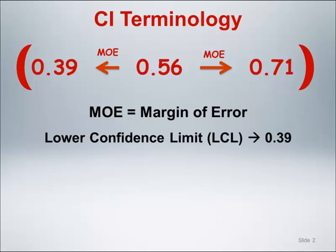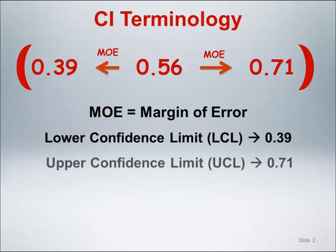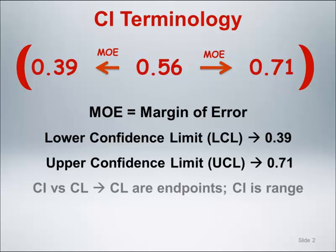We refer to the number at the lower end of the interval, here 0.39, as the lower confidence limit. The number at the upper end of the interval, here 0.71, is called the upper confidence limit. When we use the phrase confidence limits, this refers to the endpoints of the interval. When we talk about the confidence interval, we are talking about the range of the values.